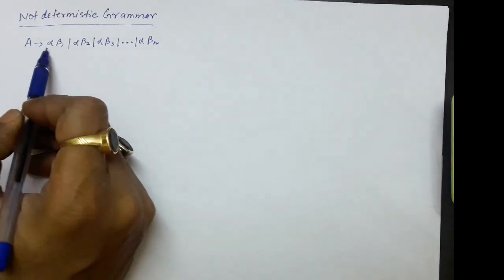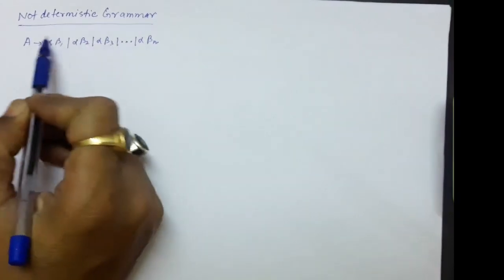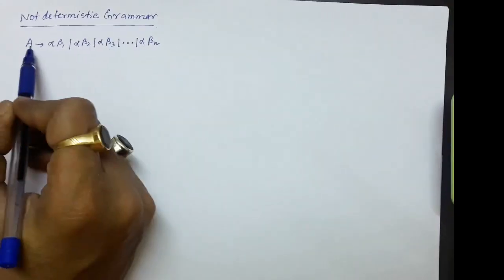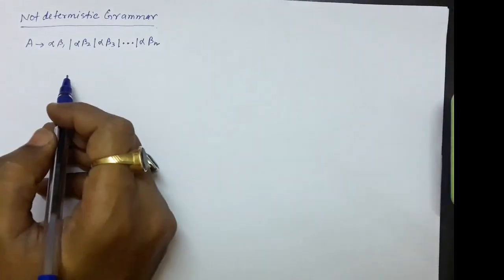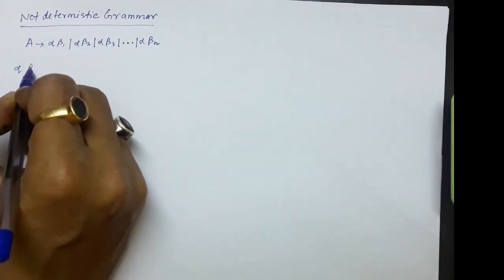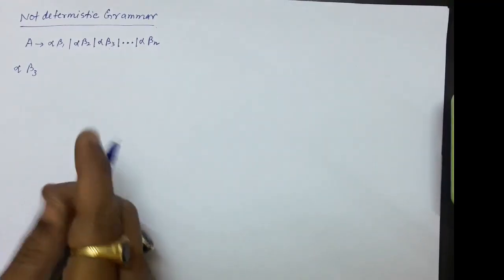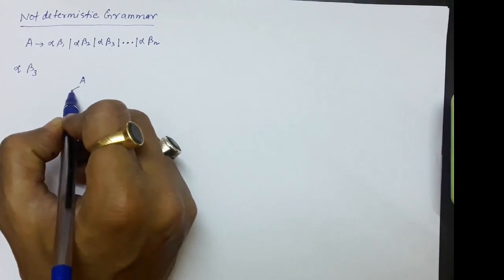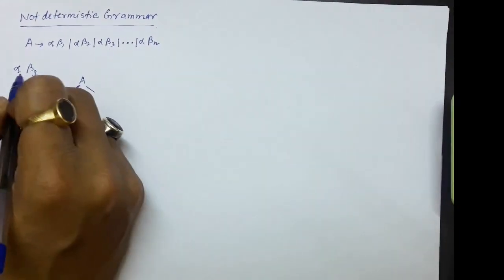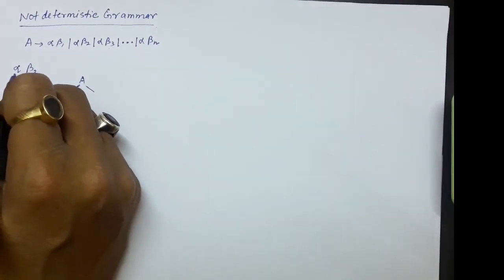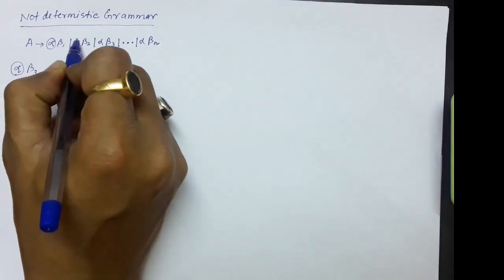Let us take an example. A produces alpha beta 1, alpha beta 2, alpha beta 3, and so on up to alpha beta n. In this grammar, we have many productions and we can select any of these n productions for the derivation. Let us suppose we have to derive a string alpha beta 3. For deriving this string, we should start from A, and the maximum element that we can compare with the productions is one only. So we can have a match of only alpha in these productions.